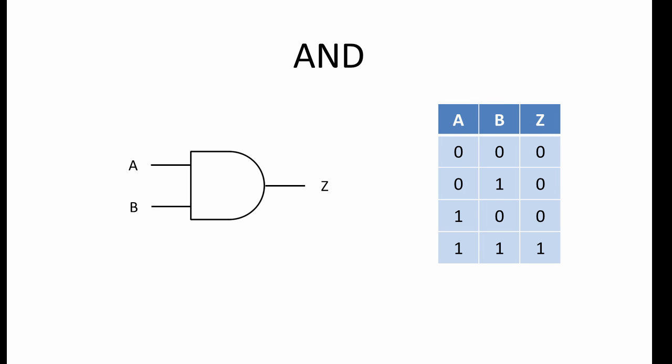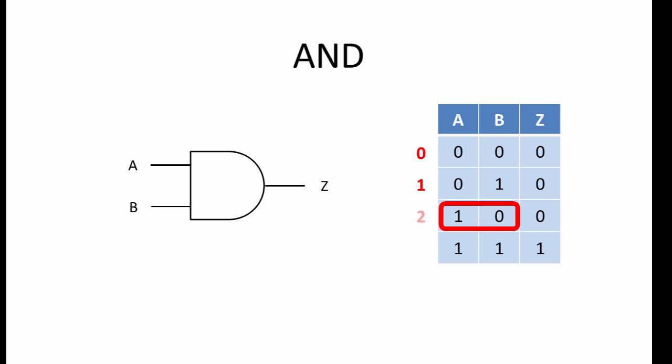This is an AND gate. There are two inputs here. When both inputs are 1, the output at Z is a 1. In all other circumstances, the output is 0. By convention, the combinations of inputs count upwards in base 10. This helps to ensure that they are all covered.